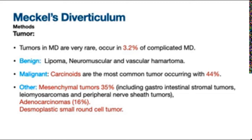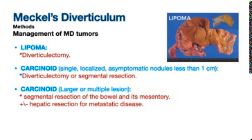Tumors of Meckel's diverticulum are very rare, occurring in only 3.2% of complicated cases. Benign tumors include lipomas and neuromuscular and vascular hamartomas. Malignant tumors include carcinoids, which are the most common, occurring in 44% of tumor cases, as well as mesenchymal tumors, adenocarcinomas, and desmoplastic small round cell tumors. Lipomas can be managed by diverticulectomy. Single, localized, small carcinoid tumors can be managed by diverticulectomy or segmental resection, while larger or multiple carcinoids require segmental resection with mesentery, with or without hepatic resection for metastatic disease.